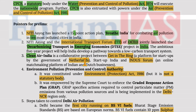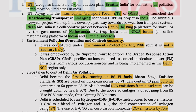Clean Air India is a collaborative project between Get In The Ring — a platform for startups by the government of Netherlands — and Startup India and Indus Forum, an online matchmaking platform for Indian and Dutch businesses. The Environment Pollution Prevention and Control Authority (EPCA) was constituted under the Environment Act of 1986 and is not a statutory body.